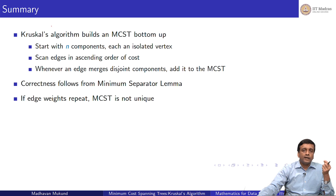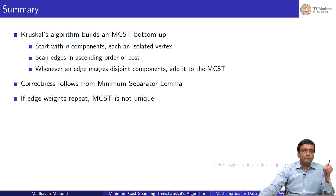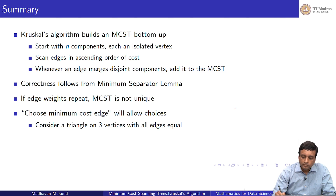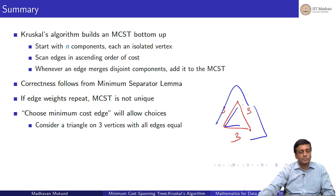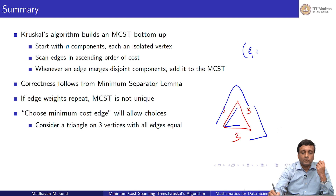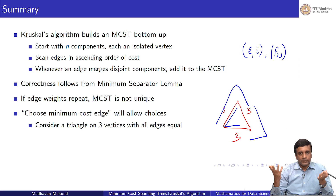If there are repeated edge weights, we may not get a unique spanning tree. For instance, consider a simple 3-vertex graph where all three edges have weight 3. Any pair of edges is a spanning tree, so all three pairs are minimum cost spanning trees. In our algorithm, when we choose the minimum cost edge with ties, we specify some ordering — and that ordering decides which spanning tree gets picked.